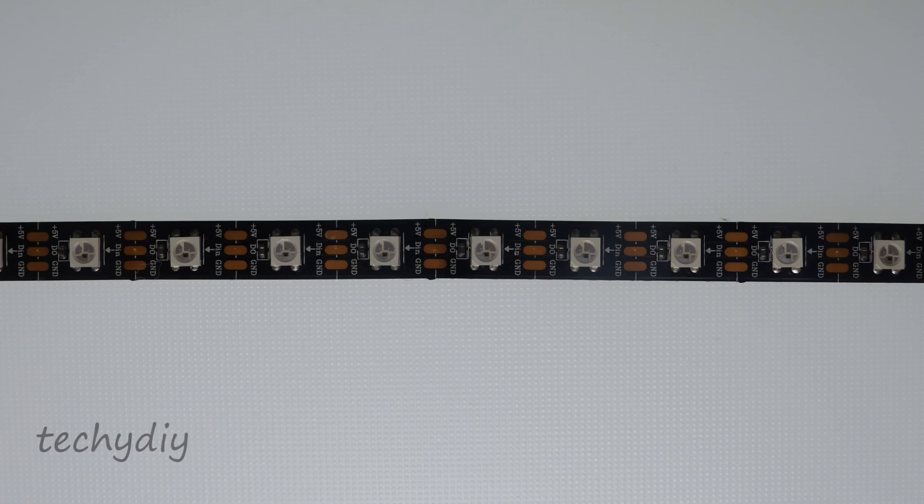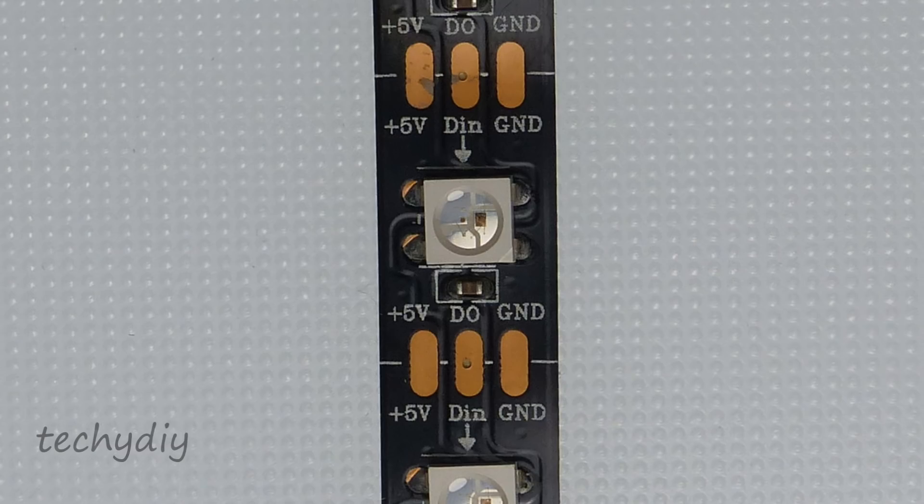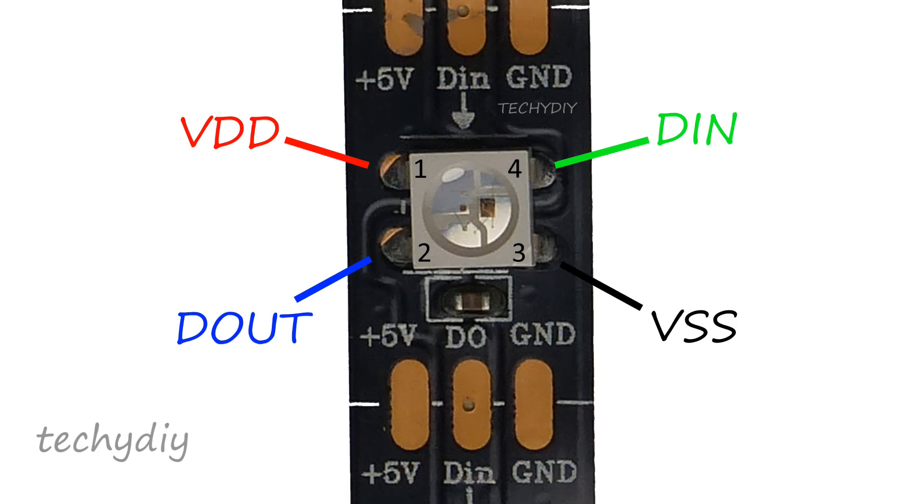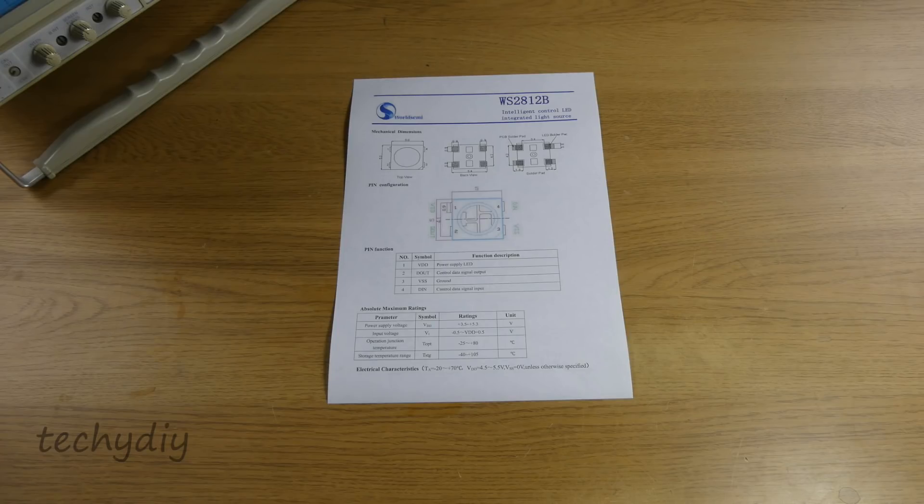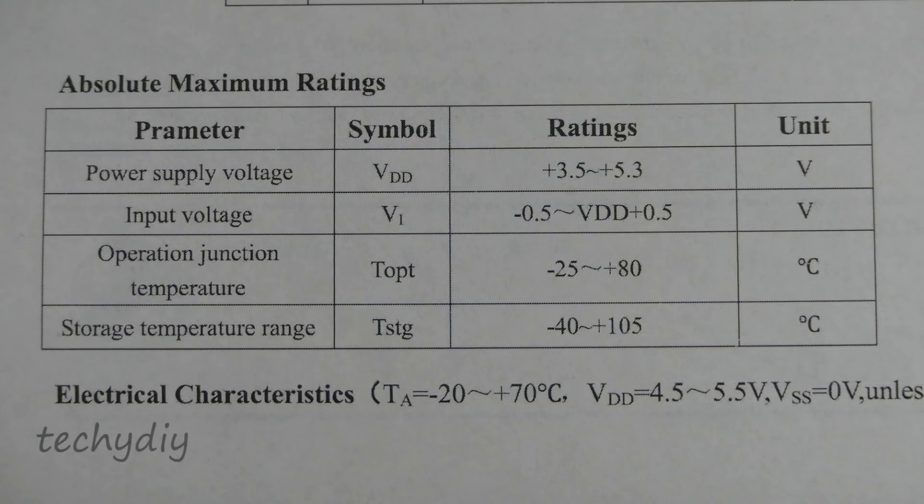The LED strip consists of a series of WS2812B LEDs. These are intelligent RGB LEDs with a built in control circuit. The connections on the LEDs are VDD which is the positive power input, D-out which is the controlled data output, VSS which is the ground, and D-in which is the controlled data input. The power supply voltage range is 3.5 volts to 5.3 volts but in practice they usually work on 3 volts.